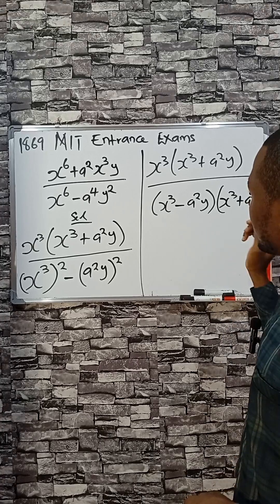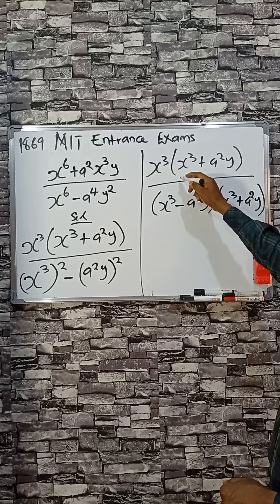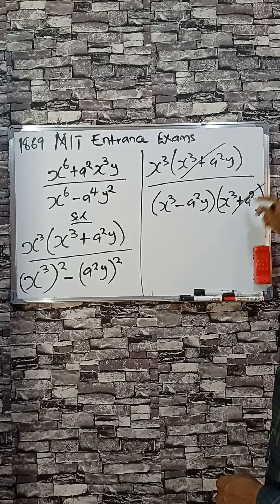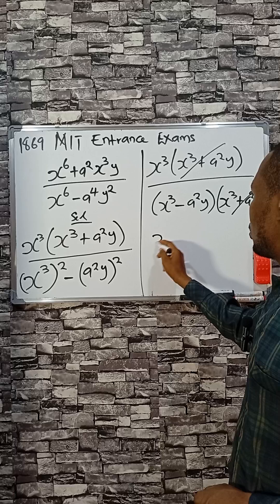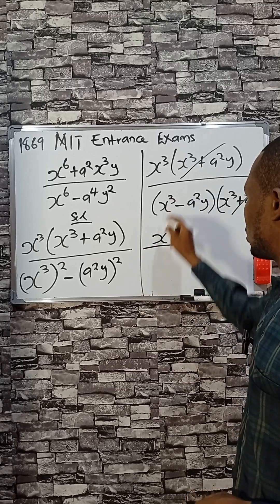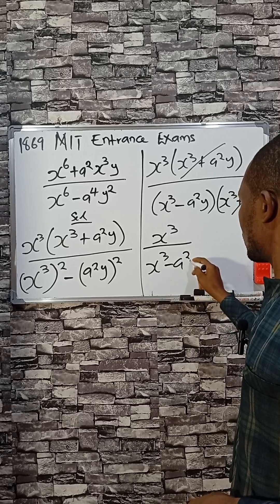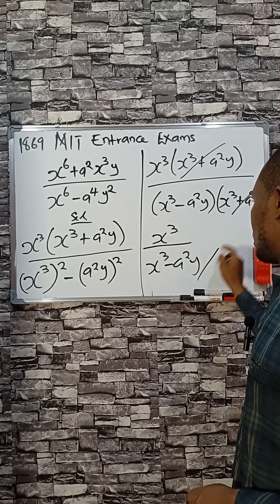Difference of two squares - if we check here, this is common, these and this are common. I'll cross it out. You have x cube all over x cube minus a squared y. This is the answer.